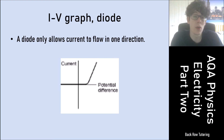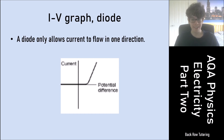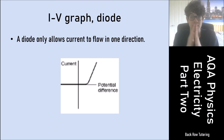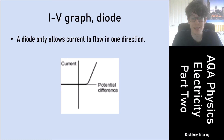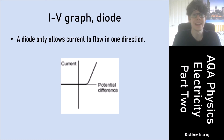Finally, you need to know the IV graph for a diode. A diode only allows current to flow in one direction. When potential difference is positive the current increases, but as potential difference approaches zero and goes negative the current is zero, because the diode blocks flow in the reverse direction. The IV graph for a diode reflects this one-directional behaviour.